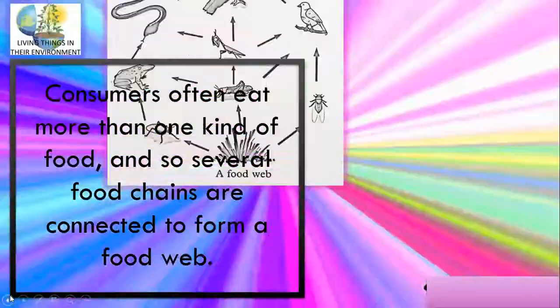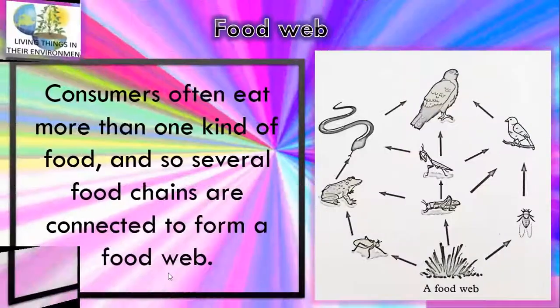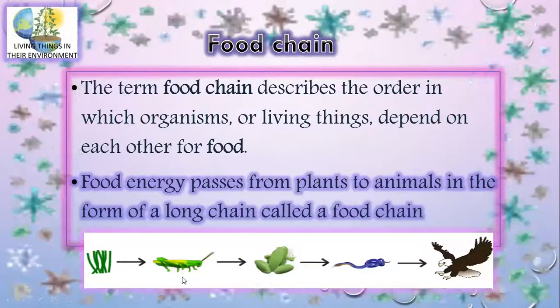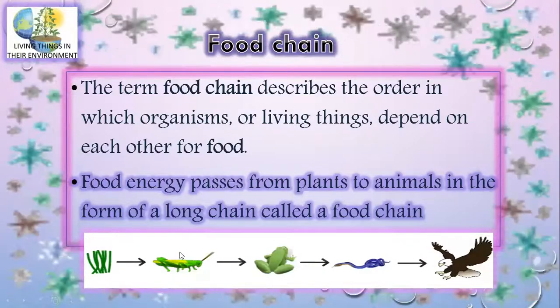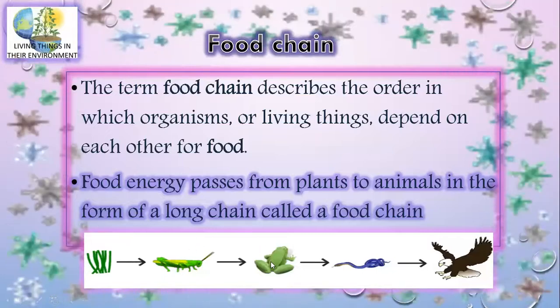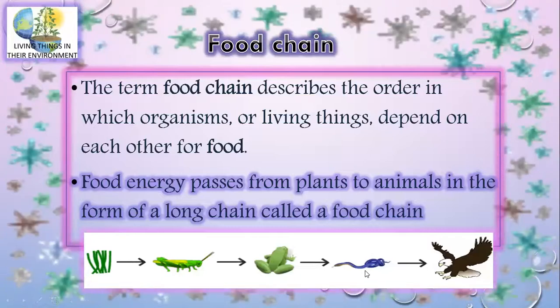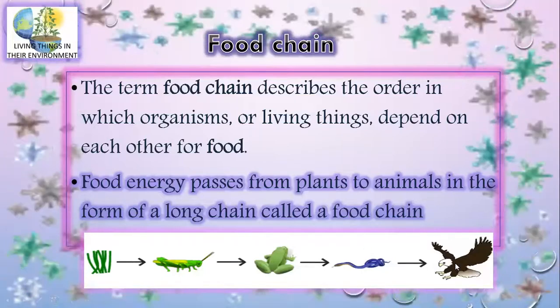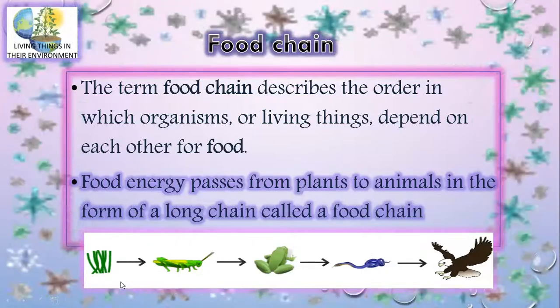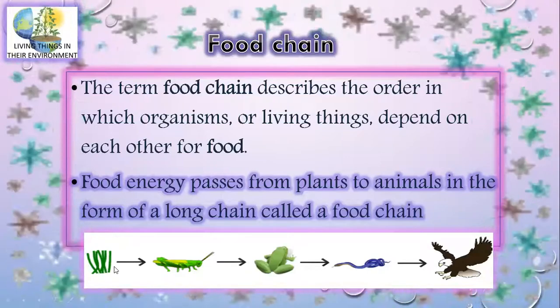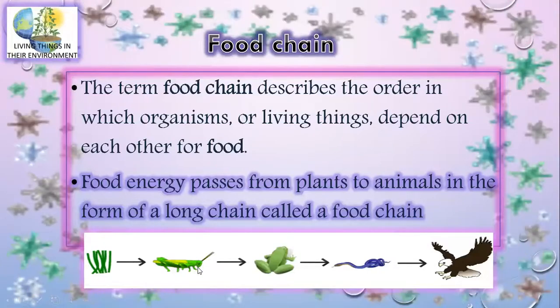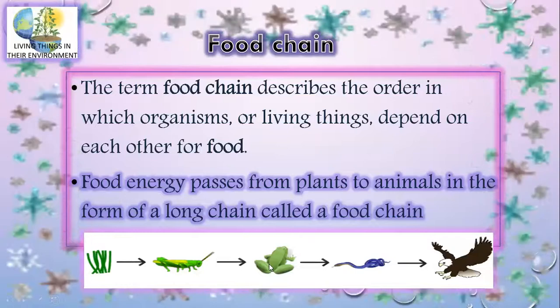As you can see in the picture, green plants pass energy to insects or any insect eating plants. That insect is eaten by a carnivore, which is eaten by another carnivore. Here in this food chain: green grass is eaten by a grasshopper, eaten by a frog, eaten by a snake, eaten by an eagle.